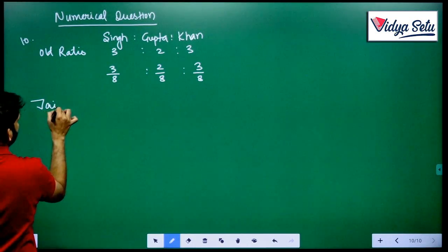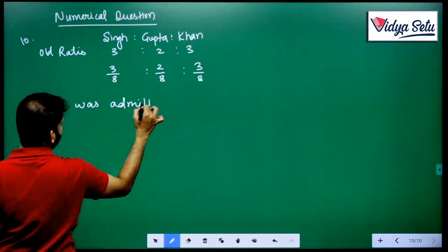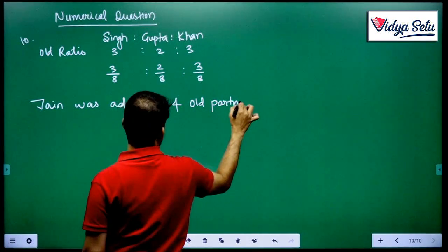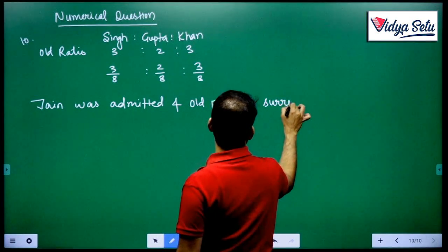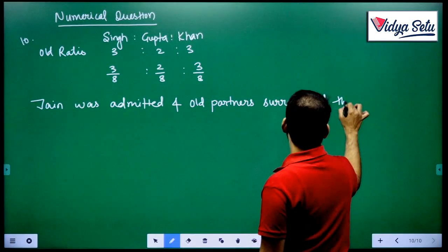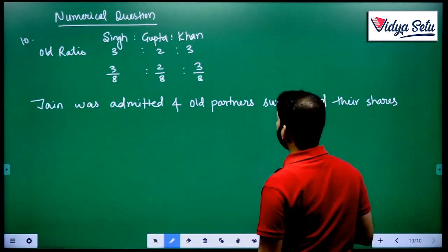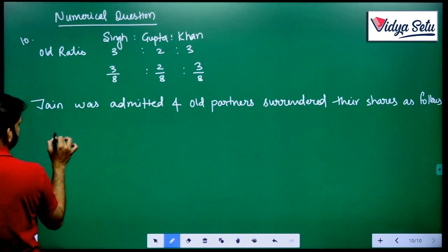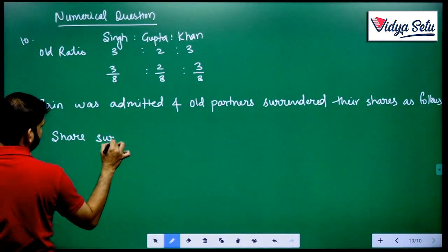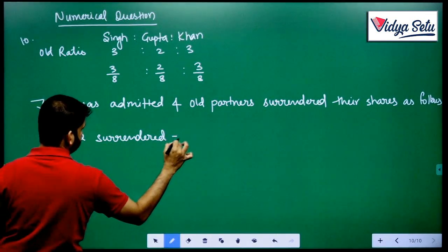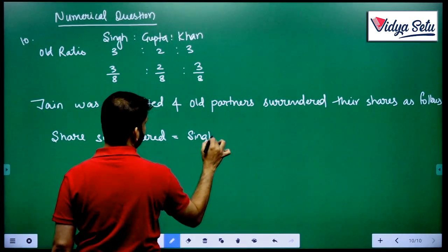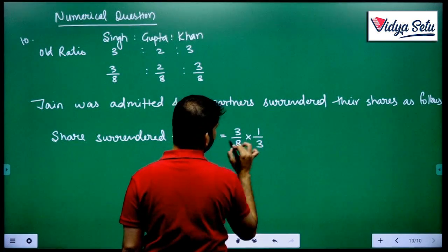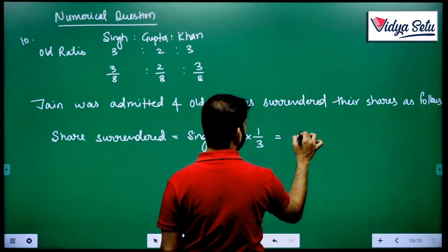Jain was admitted. Old partners surrendered their shares as follows. Share surrendered by Singh is 1 third of his share, so his share is 3 upon 8, he is surrendering 1 third of his share, that means he is surrendering 1 by 8.